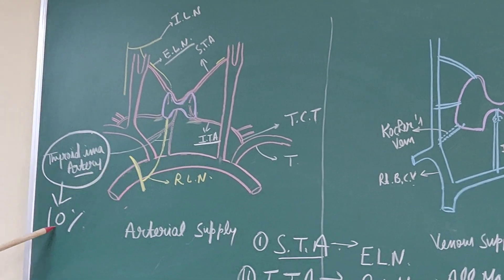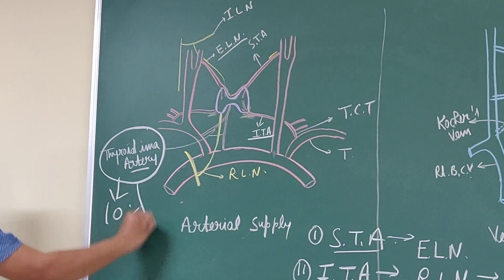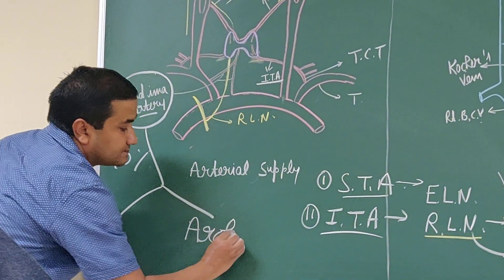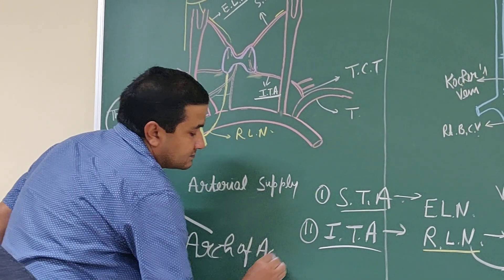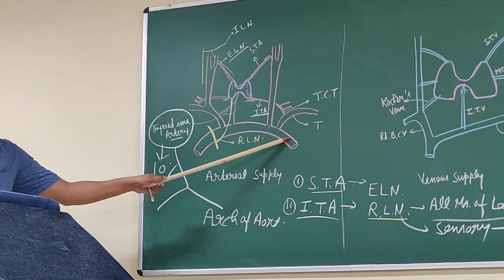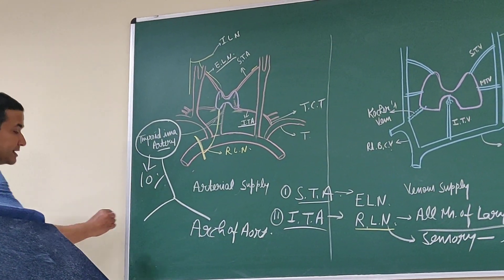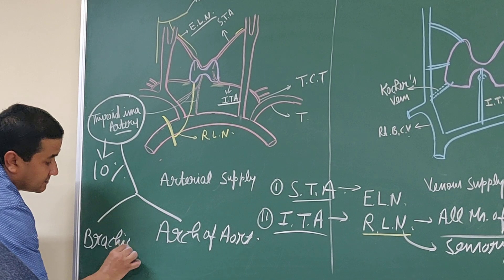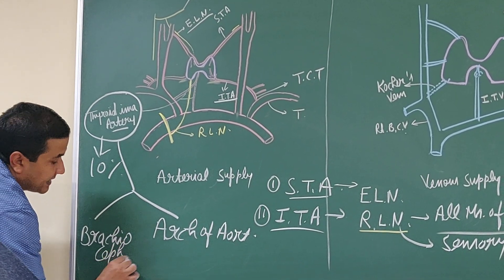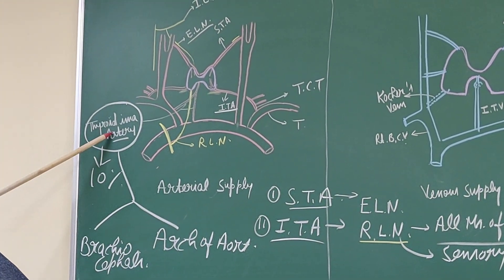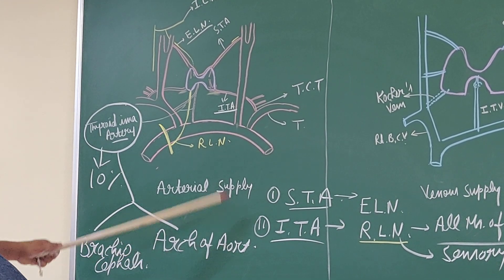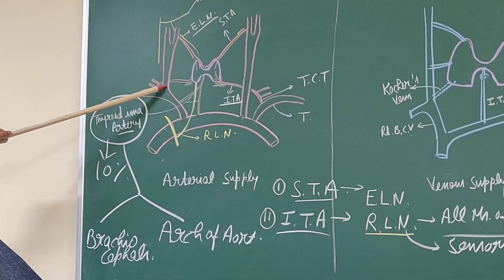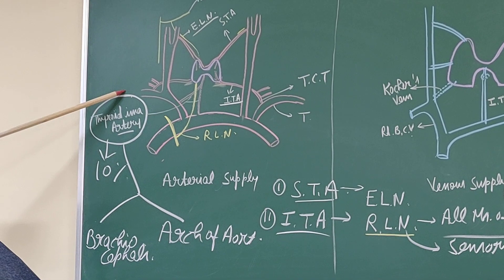The thyroidea ima artery is a branch arising either directly from the arch of the aorta, or it may take origin from the brachiocephalic trunk, which divides into the common carotid and subclavian artery on the right side.